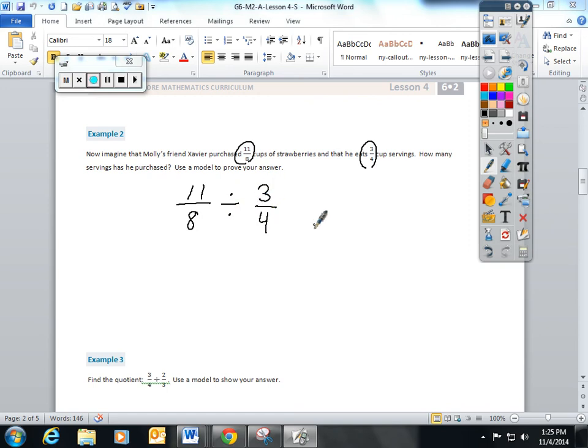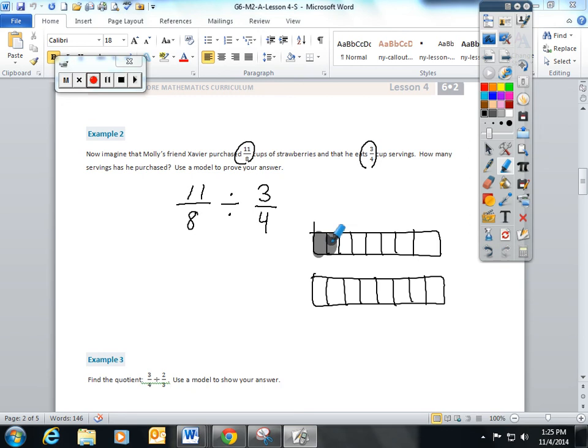Again, when I'm drawing my 11 eighths, I am going to color 1, 2, 3, 4, 5, 6, 7, 8 eighths, 9, 10, 11 eighths. Now, the students want to divide that into 3 fourths groups. This is hard because our second unit doesn't match our eighths. Very easy solution. Make it an equivalent fraction. Change it. Scale this person up.